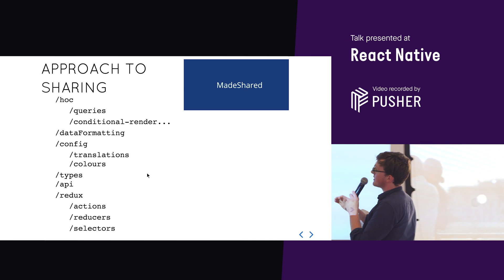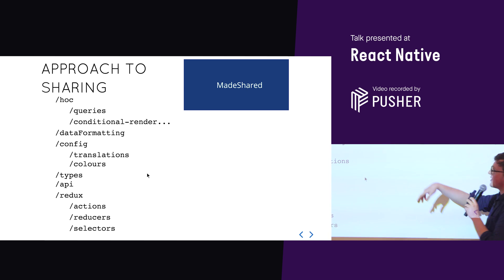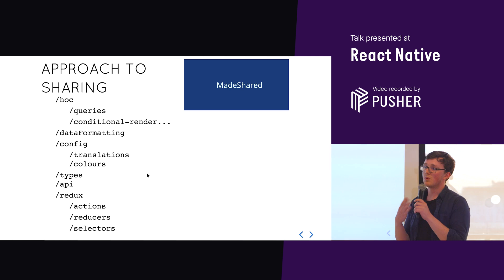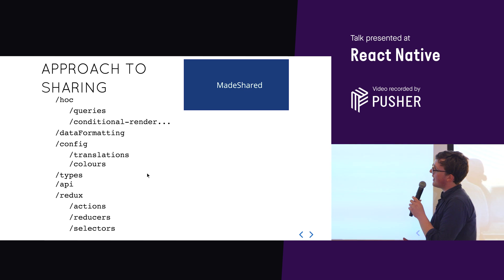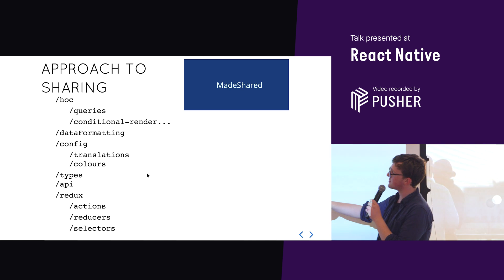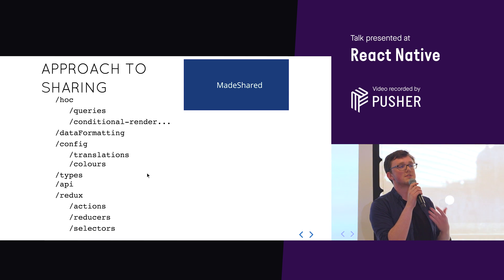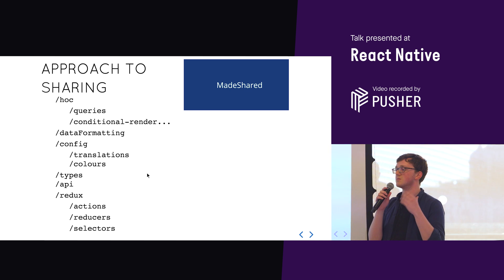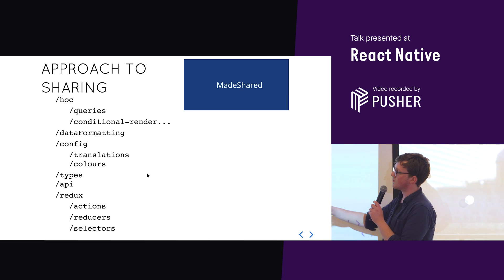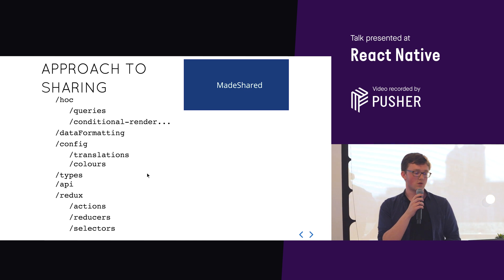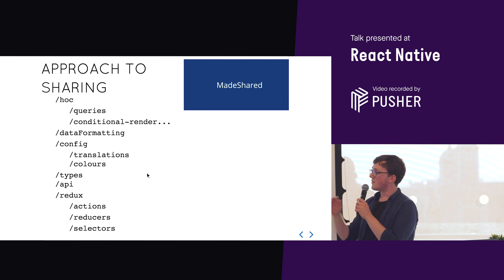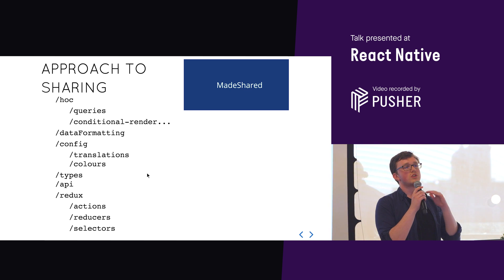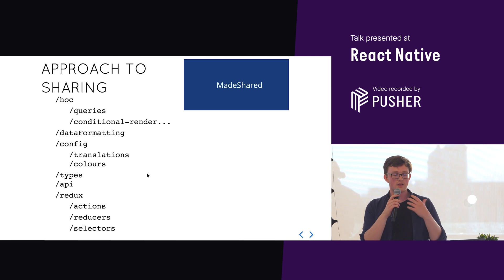What's in the shared library? Higher-order components for queries and conditional rendering — things like whether to render something based on authentication. Data formatting for requests and responses. Config files like translations and colors, consistent across environments. We use Flow for typing, which is an alternative to TypeScript, and we share specific types for products and search results, giving a very consistent Redux store. API calls are completely shared, and the entire Redux store is shared — actions, reducers, selectors — and we choose which parts to use in web versus native so neither has a bulky store.